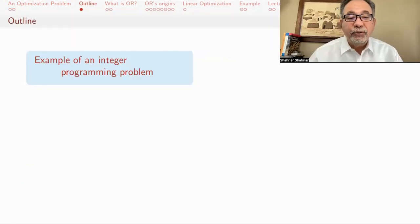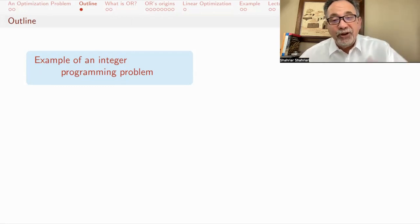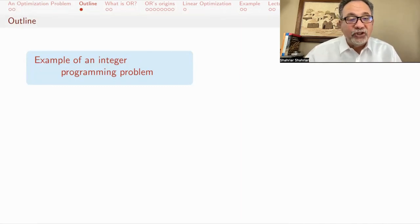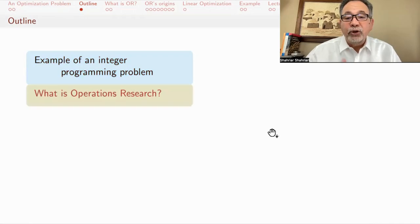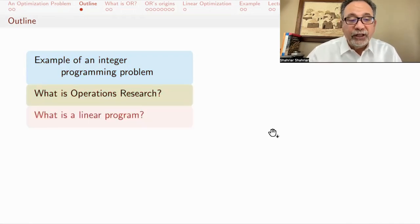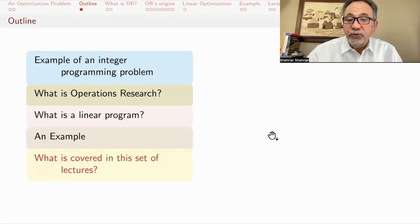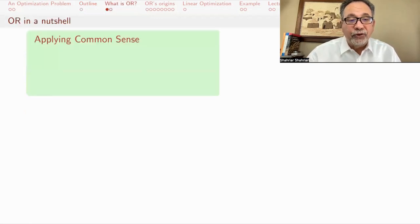I just gave you an example of an integer programming problem. It's integer programming because you can't just say you play half of your game here and another half somewhere else. You have to have a whole number of games allocated in certain ways. In this lecture, I'm going to tell you what operations research is and a little bit about its history. We'll tell you what a linear program is and give you more examples. And I will tell you also what's covered in this set of lectures.